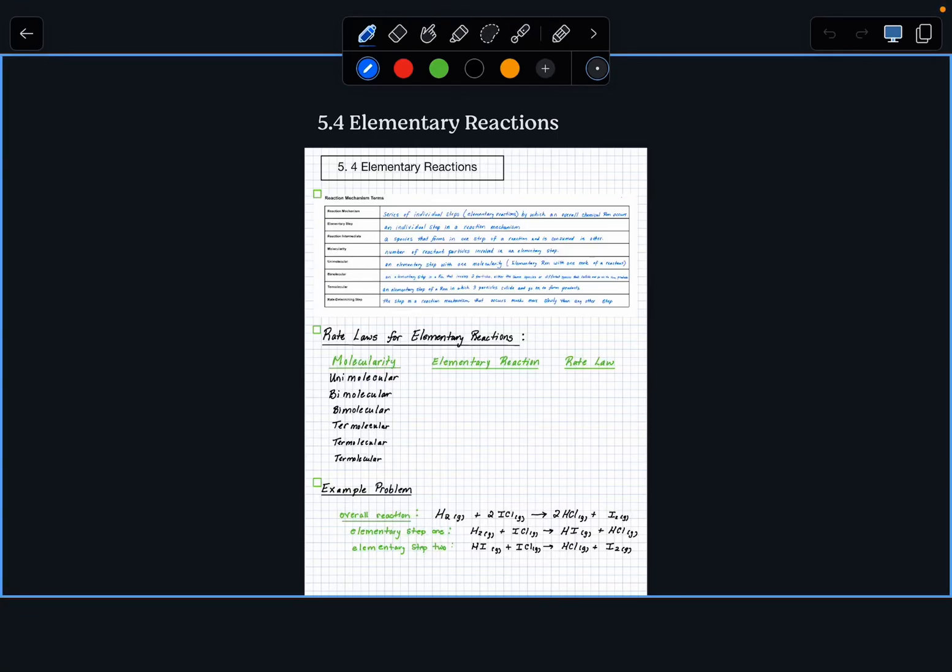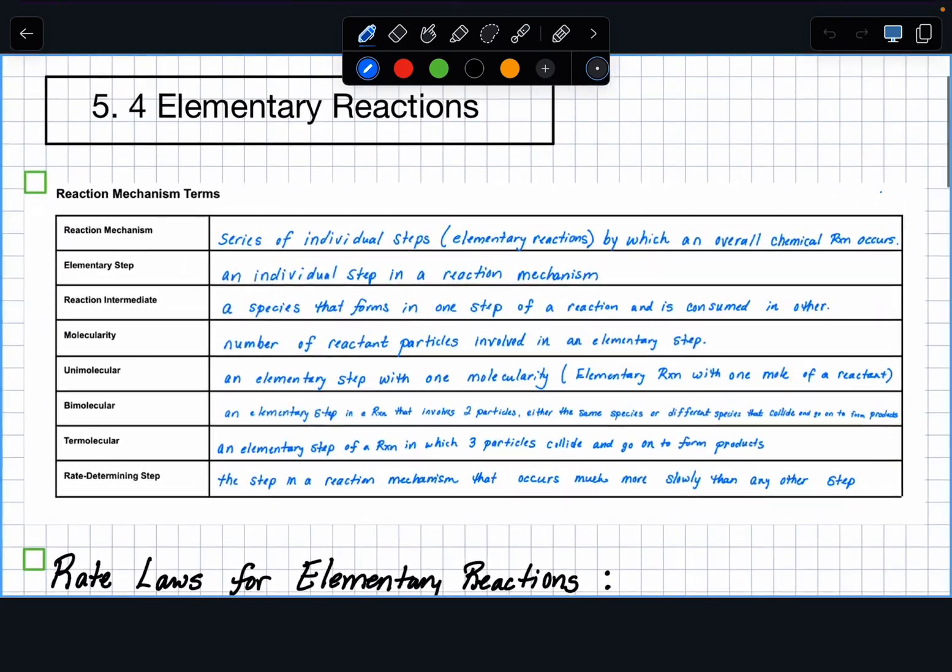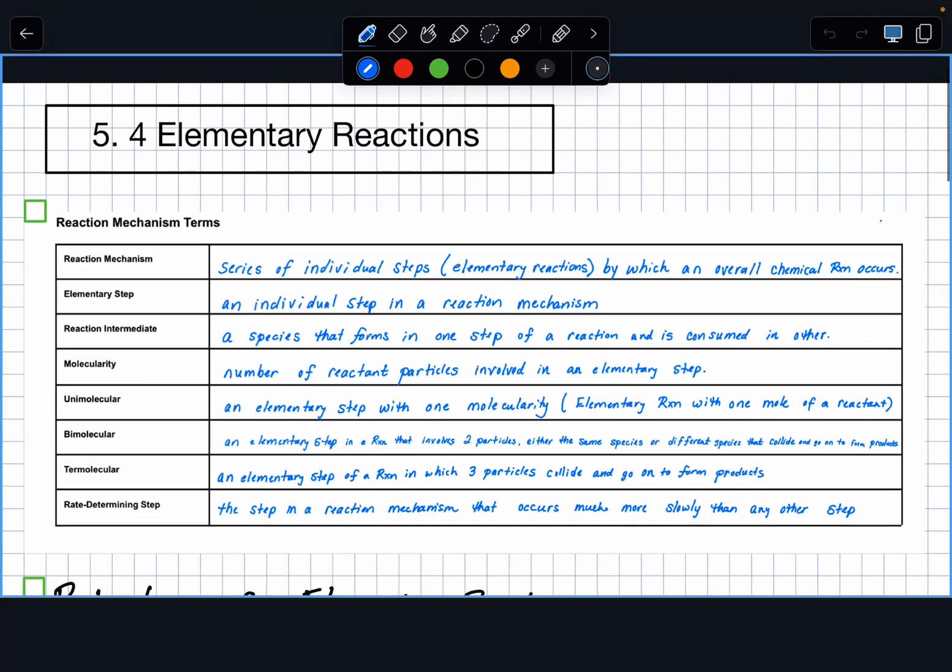In Unit 5, there's a Section 4 called Elementary Reactions for AP Chemistry. It's also a topic in other levels of chemistry, but typically it's covered in Unit 5 with the Kinetics Chapter in college-level chemistry. The first thing I'm going to do is focus on the reaction mechanism terms that are part of this section, and then I'll move on to a table that helps us decide something called molecularity and how we can write a rate law based on molecularity. We used to write rate laws based off of a data table or off of a graph.